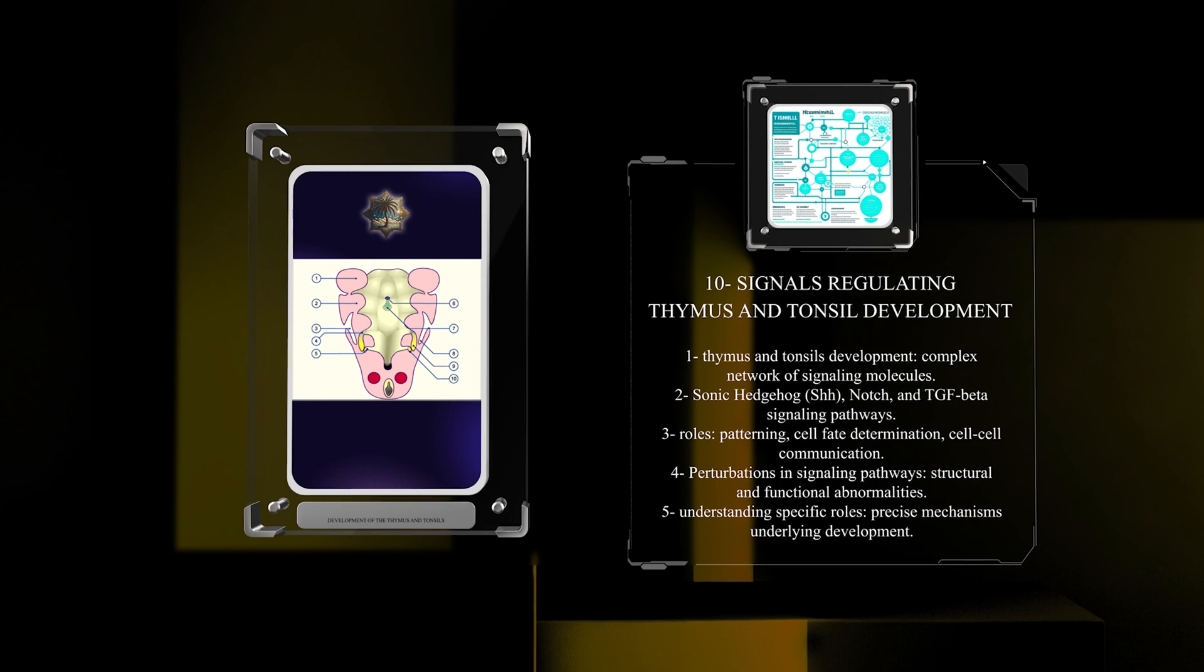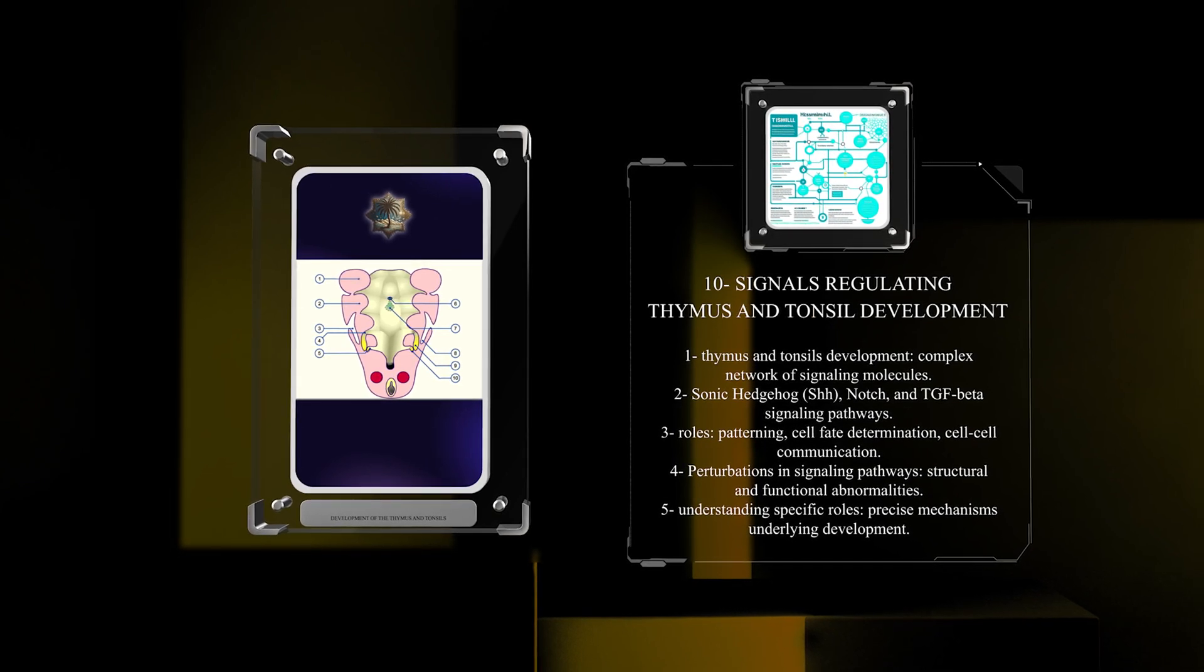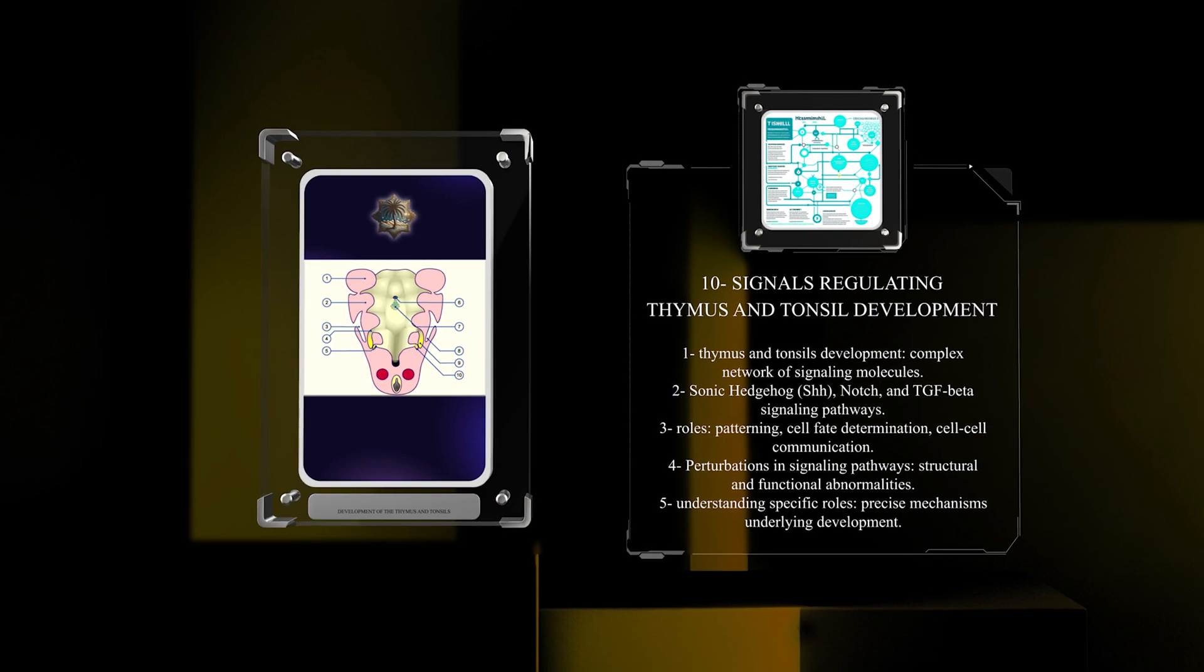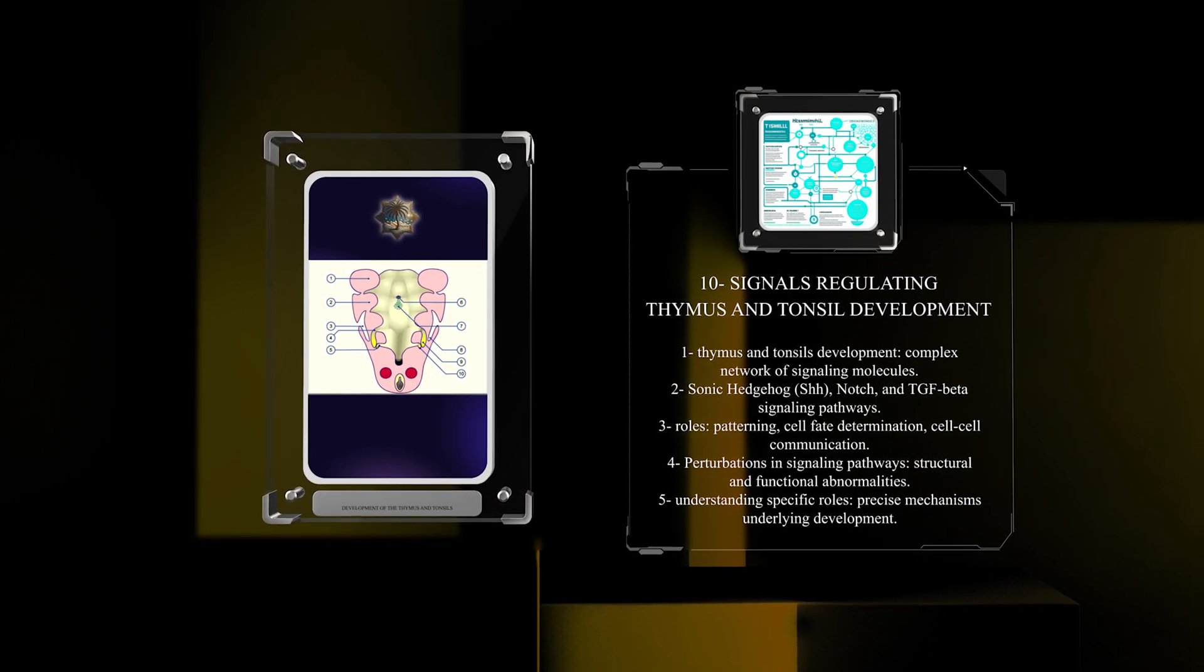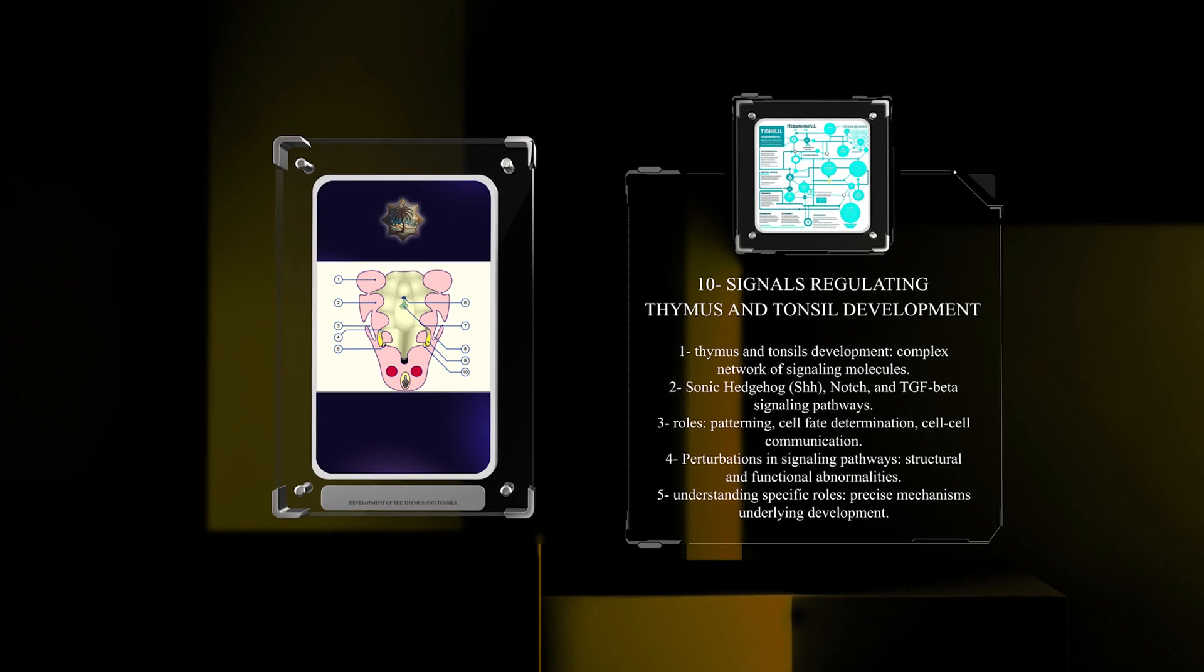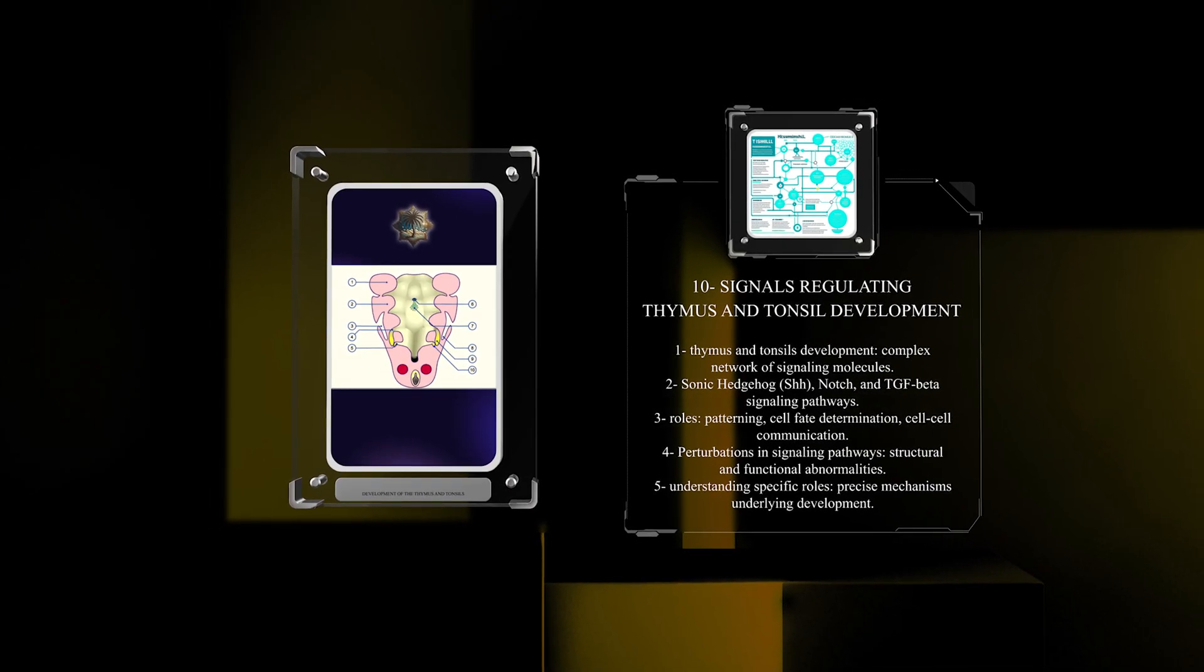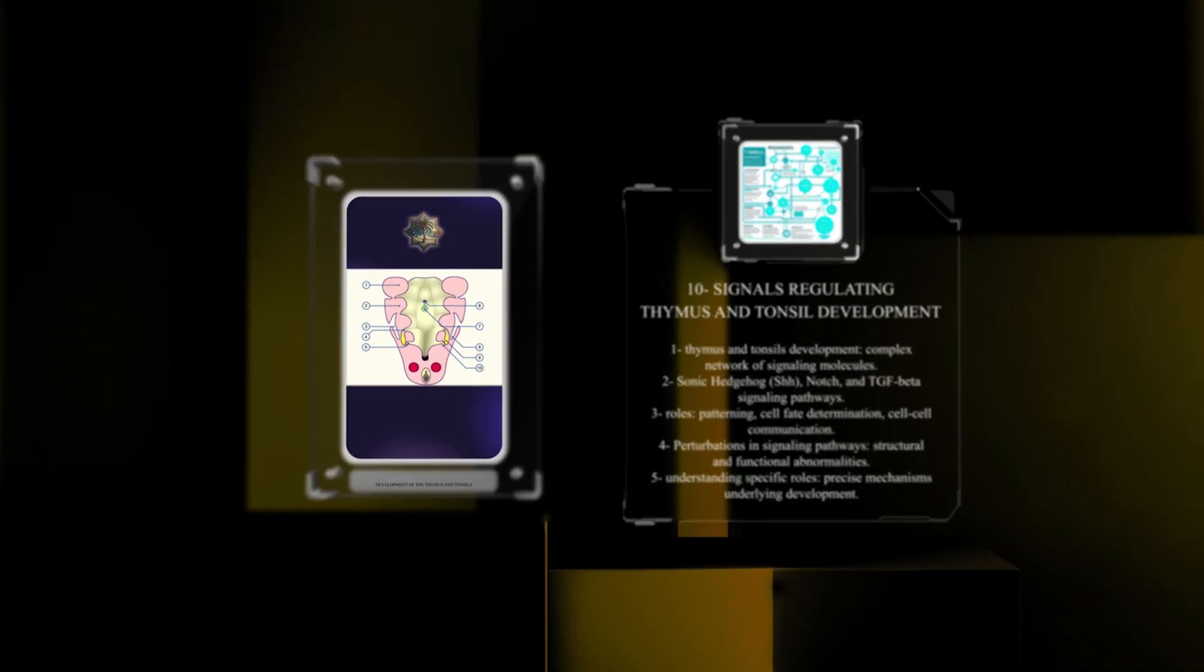These pathways play crucial roles in patterning, cell fate determination, and cell-cell communication. Perturbations in these signaling pathways can lead to structural and functional abnormalities in the thymus and tonsils. Understanding the specific roles of these signaling molecules enables us to comprehend the precise mechanisms underlying the development of these organs.